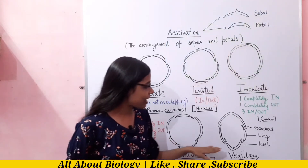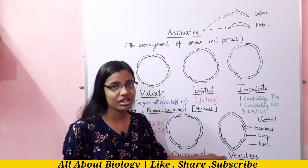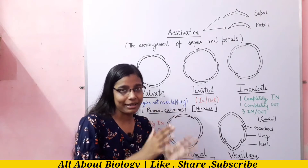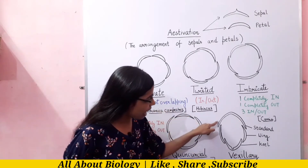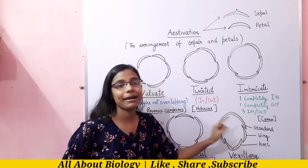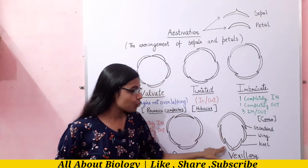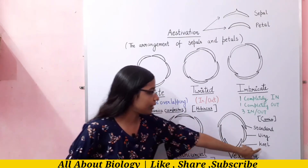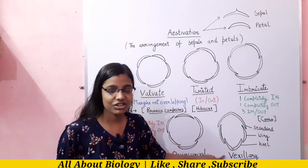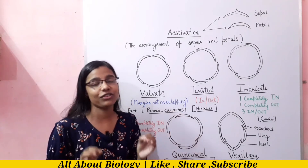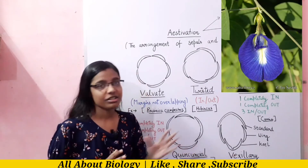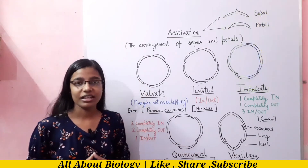Coming to our next type — vexillary aestivation. In this type, the petal shows a different pattern. You will see a larger petal called the standard, two lateral petals called the wings, and two smaller fused petals called the keel. This is the characteristic feature of the family Papilionaceae, and it can be seen in pea.